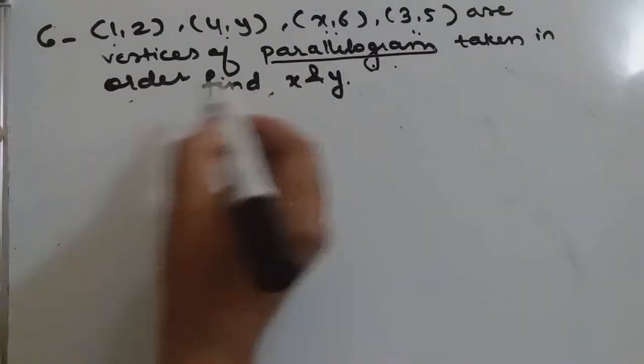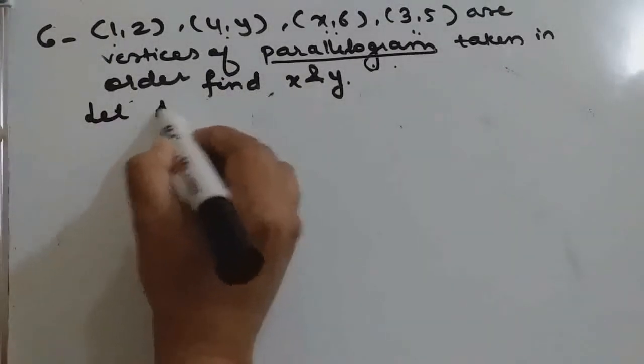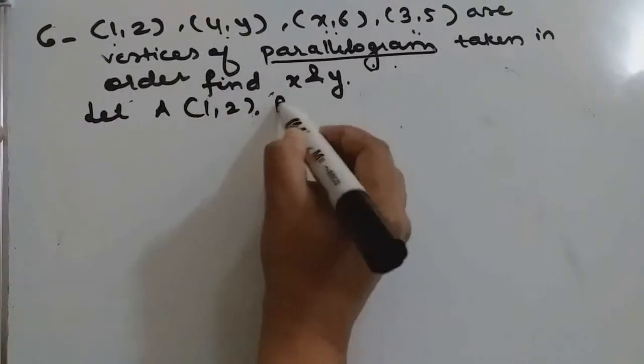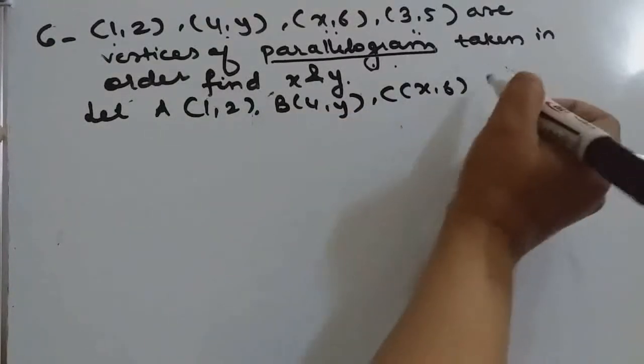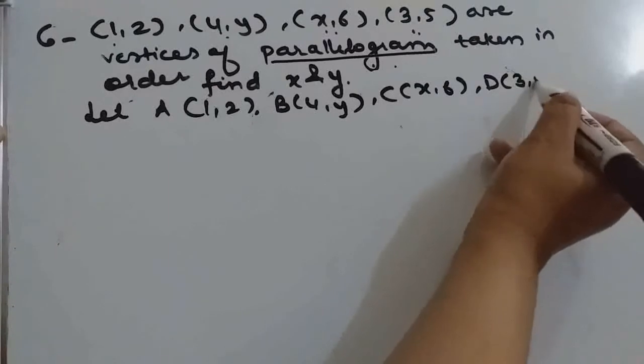So, find x and y. Suppose let A be (1, 2), B be (4, y), C be (x, 6), and D be (3, 5).